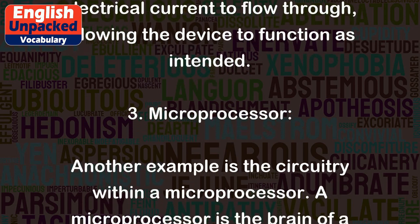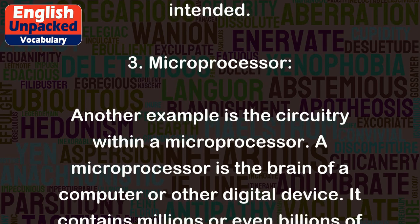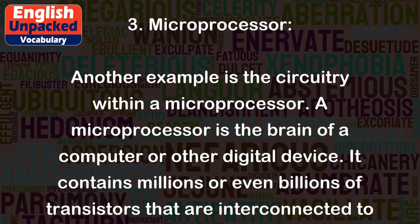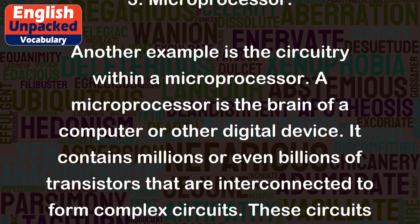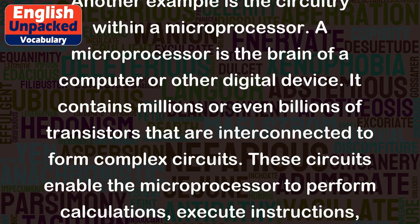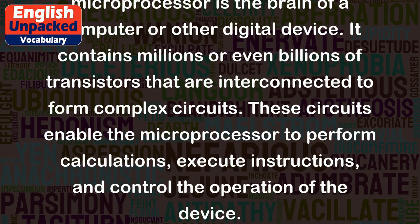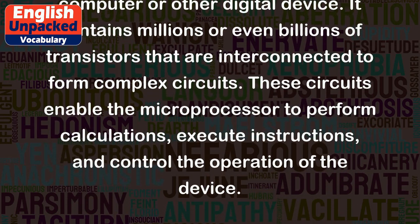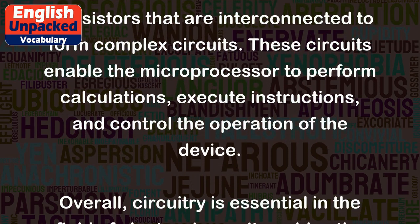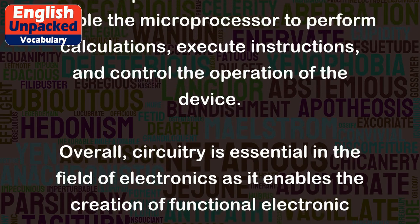Third, a microprocessor: another example is the circuitry within a microprocessor. A microprocessor is the brain of a computer or other digital device. It contains millions or even billions of transistors that are interconnected to form complex circuits. These circuits enable the microprocessor to perform calculations, execute instructions, and control the operation of the device.